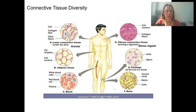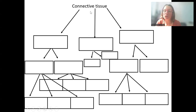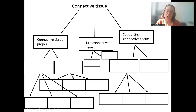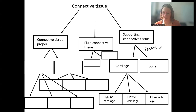Let's go over a flow chart of the types of connective tissue — we will see all of these in detail. Connective tissue can be broken down into three main categories: connective tissue proper, fluid connective tissue, and supporting connective tissue. Supporting connective tissue is our most physically supportive — cartilage and bone make up most of our skeleton. There are three types of cartilage: hyaline cartilage, elastic cartilage, and fibrocartilage, which differ based on ground substance composition and fiber composition.